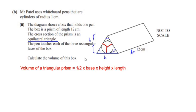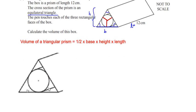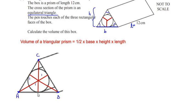Let us consider the cross-sectional area of the triangle. I have magnified the cross-section. The radius of the circle is 1 centimeter on all sides. We draw lines from the center connecting to each vertex of the triangle. The vertices of the triangle are labeled A, B, C, and the contact points as P, Q, R, with the center labeled O.